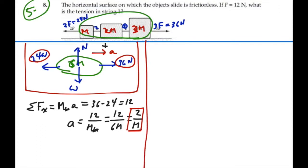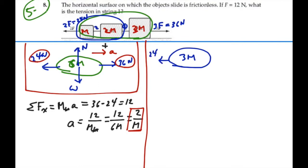We want to know the tension in string number one, so let's try a different blob. Let's blob the first two blocks together. The free body diagram of just those two blocks has a total mass of 3m. The external forces are 24 newtons going to the left, and on the right, only tension one is contacting this blob. Weight and normal force are transverse to the motion, so they won't contribute to the acceleration, which is 2 divided by m to the right.